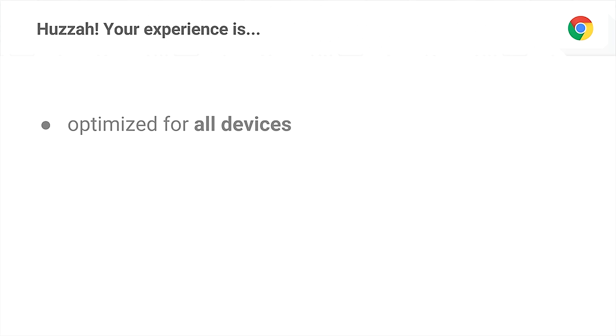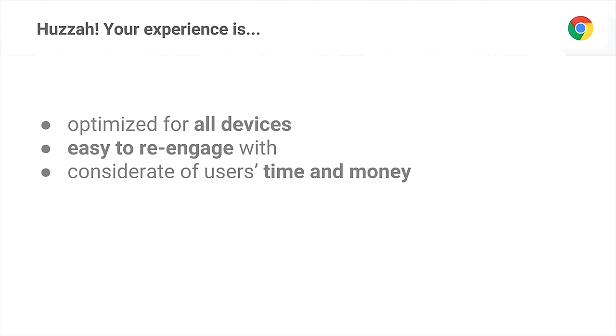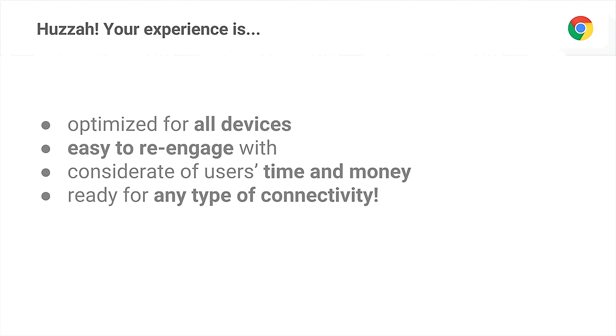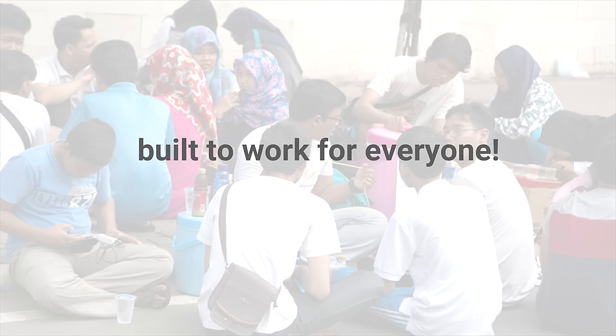So with all of these things, you've created an experience that's ideally optimized for all devices — not assuming the big device profiles we might have in our pocket. You've made it really easy for users to re-engage, not adding extra steps that cost time and money. When they're in your experience, you've made sure that clicks and interactions are sensitive to loading speeds and associated costs. And you've adjusted to ensure that on any type of connection, your experience still works well and can fluctuate and adapt. With all of these things, you can really make an experience that works for everyone — whether it's a user coming online for the very first time or someone on fast Wi-Fi — building something that works for all the billions of users we're hoping to see come online. Thank you very much.